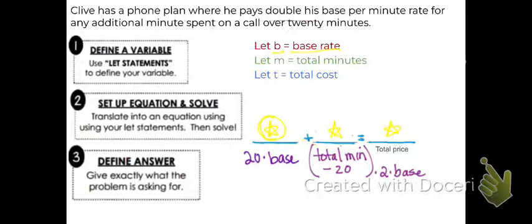On the second one, it's our total minutes minus 20 to figure out how many minutes we're charged double the base rate. So total minutes minus 20. Remember, we don't know the total minutes now. M is our total minutes. And then all that's multiplied by 2 times the base rate. Remember, B is our base rate. So how do you represent that on this line?